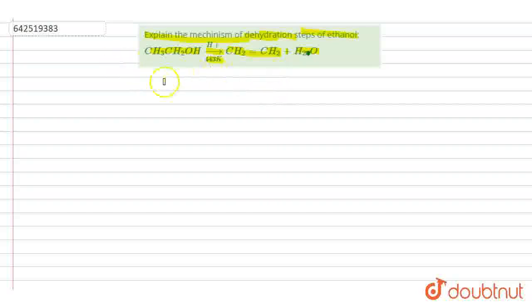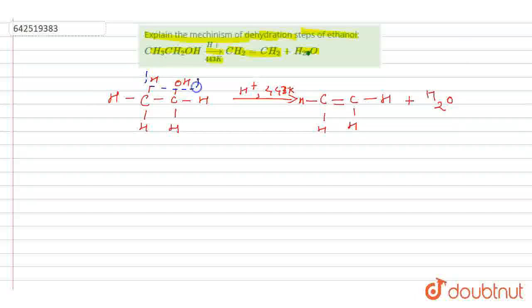Let's see the structure for this here. Here C, H, then C, OH and H's around it. When they react in the presence of H plus and 443 Kelvins, it will give C double bond C, CH2, H and H plus H2O. In this case, the removal of water molecule will take place from here. This water molecule gets removed to form ethene.